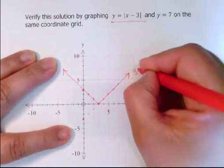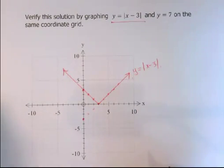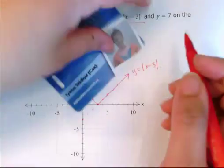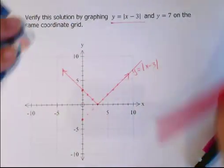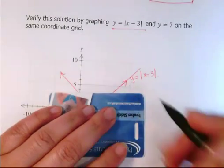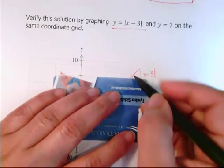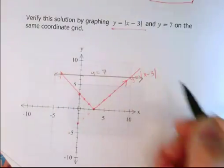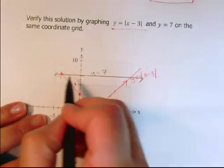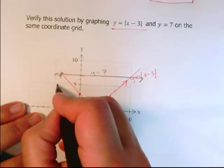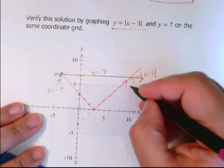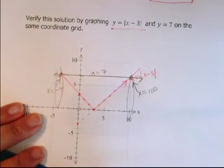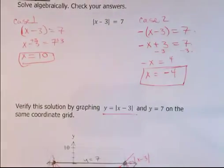And this is the y equals absolute value of x minus 3 part. And then I'm going to graph y equals 7 on the same graph. I'm just going to extend this a little bit. And then we've got our y equals 7 - so that's 7 right there. And then I'm going to draw this line straight across, because that's what y equals 7 looks like. And what we're doing is we're finding where these two equations intersect. So these two graphs intersect precisely at negative 4 - that's x equals negative 4. And this right here is x equals 10. So you can see that right there, that's exactly where they intersect. That's what we got in our original solution.